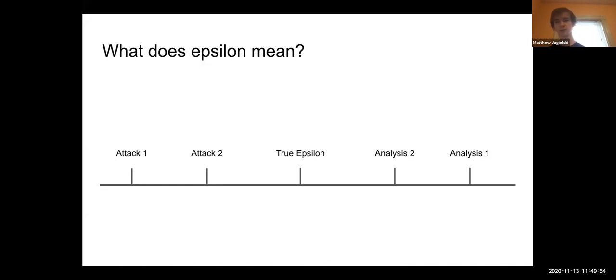One thing we can do is run attacks to get lower bounds on this epsilon. You can think of attacks as providing lower bounds on the epsilon and analysis as providing upper bounds. The gap between the best attack and the best analysis is where the true privacy leakage of the algorithm is. The bigger this gap is, the more ambiguous it is for someone deploying a differentially private algorithm in practice, because they don't know whether a new attack is going to come along tomorrow with significant privacy leakage or whether new analysis is going to say the algorithm is already way more private than they thought.